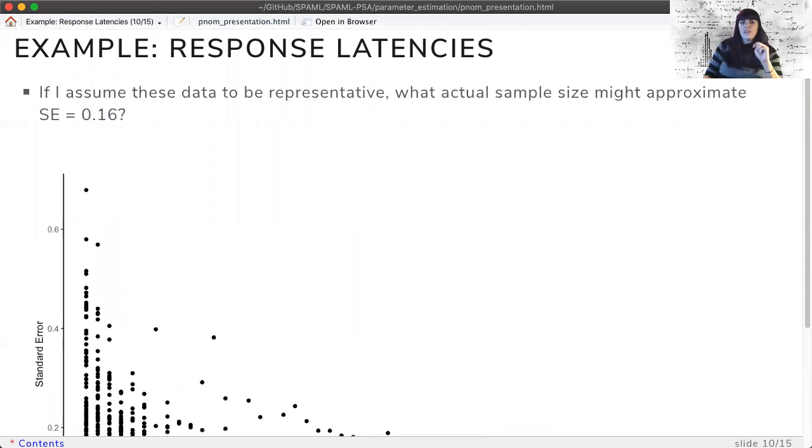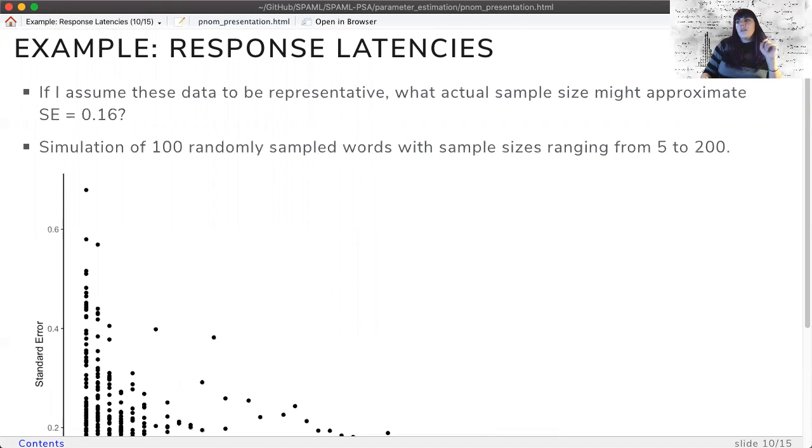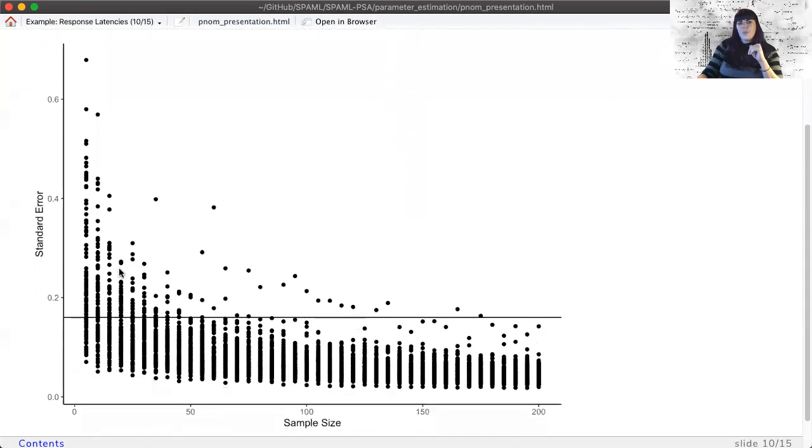If I assume these data are representative of my potential stimuli list, what sample size should I expect to meet that standard error? I randomly selected 100 words from the larger set, sampled with replacement to achieve sample sizes of 5, 10, 15, 20, up to 200. So while the real data averages approximately 30 participants per word, I can simulate larger sample sizes for testing. This graph indicates that small samples are pretty variable, while larger samples show the expected decrease in variance.